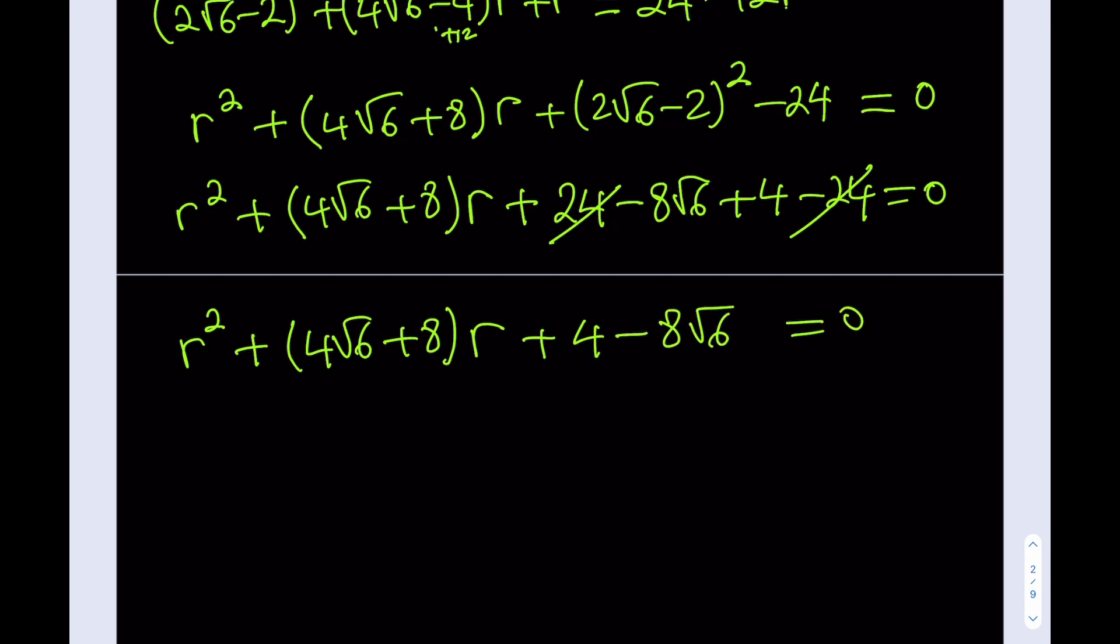And what am I getting from here? r² + (4√6 + 8)r + 4 - 8√6 = 0. So there's something interesting here that got my attention actually. If you look at it carefully, we have 4√6 here and 8, and we have 8√6 here and 4. Of course there's a minus sign, but I kind of find that interesting. Okay.